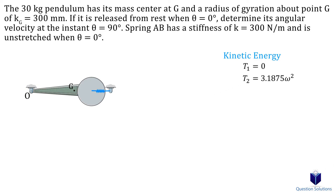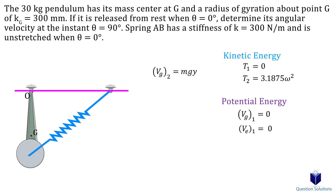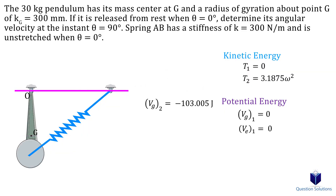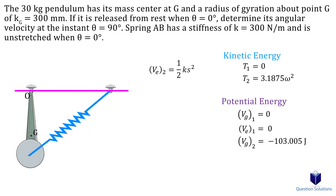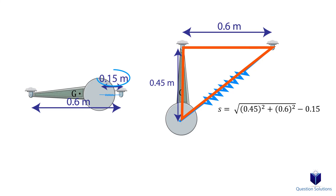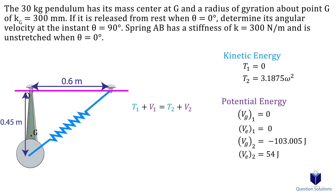Drawing a datum at theta equals zero degrees, both initial gravitational and elastic potential energy are zero since there's no displacement and the spring is not stretched. When theta equals 90 degrees, point G is 0.35 meters below the datum, giving a negative final gravitational potential energy. For the final elastic potential energy, we use the Pythagorean theorem to find the total spring stretch minus the initial length, then use that with the spring stiffness. Plugging all values into the conservation of energy equation, we solve for the angular velocity.